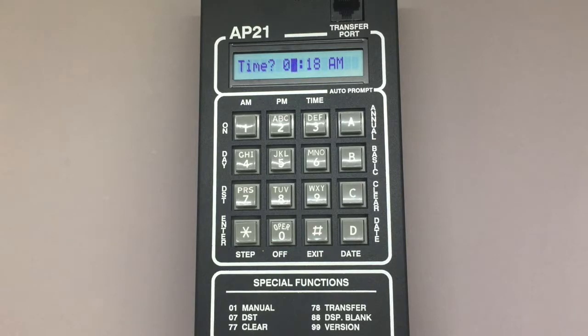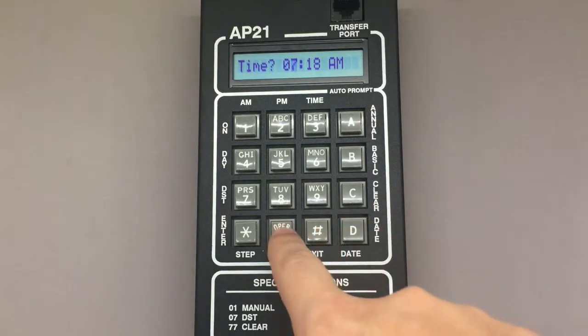On this screen, you'll see the cursor on the hour input. Using the AP21 keypad, type in the current hour. Right now it's 2:15 PM, so I'm going to press 02.